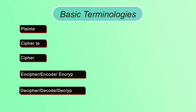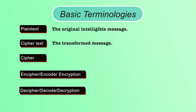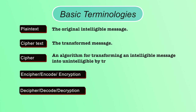Basic terminologies: Plain text is the original form of the message which can be easily understood. Ciphertext is the converted form of the original message which cannot be understood by the attacker. Cipher is an algorithm for converting plain text to ciphertext with the help of transposition and substitution ciphers. In substitution cipher, a block of plain text is replaced by ciphertext. In transposition cipher, the letters of the plain text are shifted to form the cryptogram.